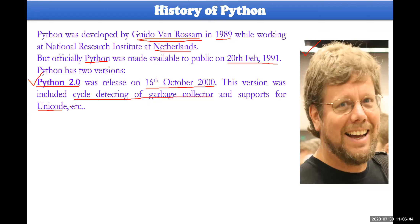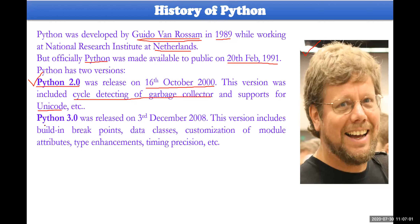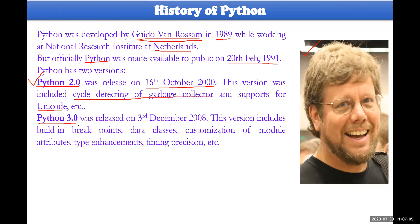You may connect many number of electronic devices, such as AC, TV, TV remote, AC remote, and many other things which are used to develop here. The second version is Python 3.0, also available, and it was released on 3rd December 2008.